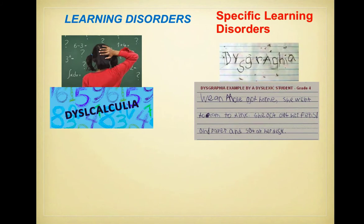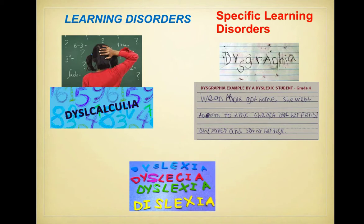Impairment in written expression is called dysgraphia. This disorder exists even though the child may be a good reader. It can affect spelling, grammar, punctuation, or the creation of sentences and paragraphs — it is one of the more common learning disabilities. A student with dysgraphia may read well yet write poorly, and it is important not to simply tell them to work harder. Dyslexia — impairment in reading — involves difficulty recognizing letters and words and comprehending written text.